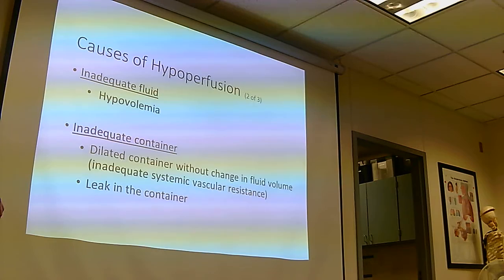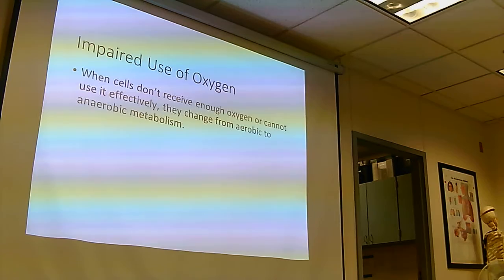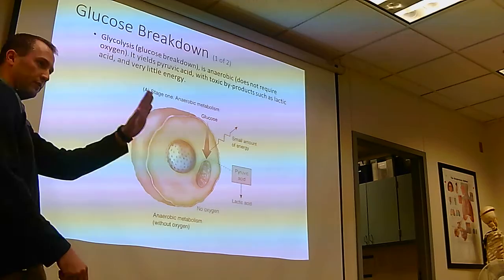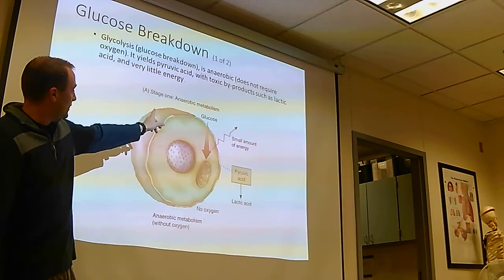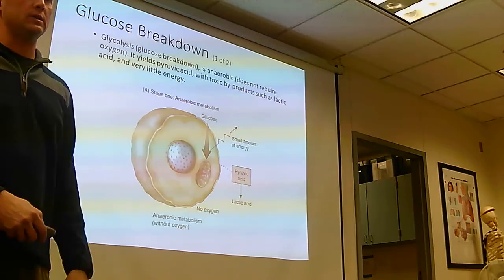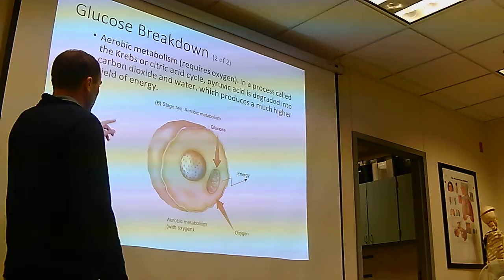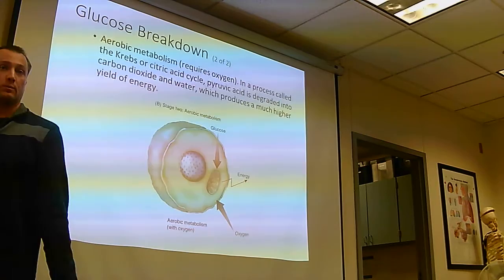We'll breeze through some of this. All you need to pull away from this - don't memorize anything here. The gist: anaerobic metabolism without oxygen gives you a little amount of energy plus acid, converted to lactic acid. Whereas with oxygen - aerobic - you get more energy, and oxygen becomes more energy with no acid production. Much more efficient process.